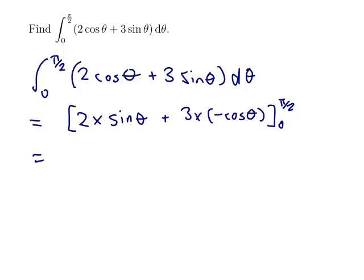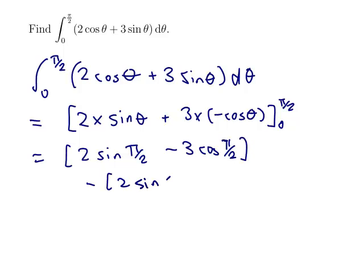Okay, so we'll now sub in the pi on the 2 and the 0. So, 2 sin pi on 2 minus 3 cos pi on 2 minus 2 sin 0 minus 3 cos 0.